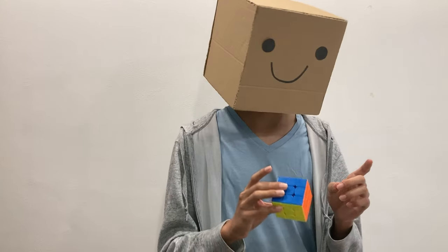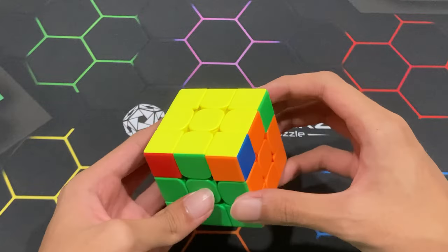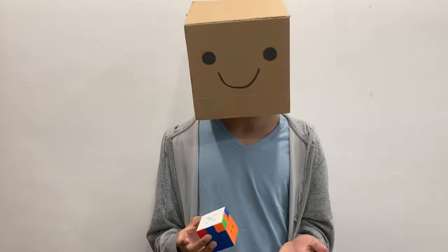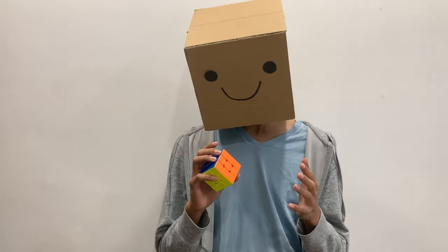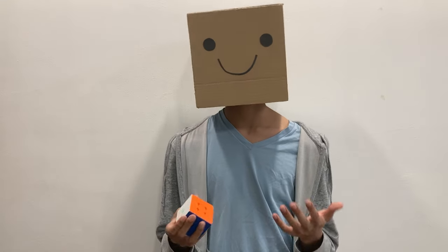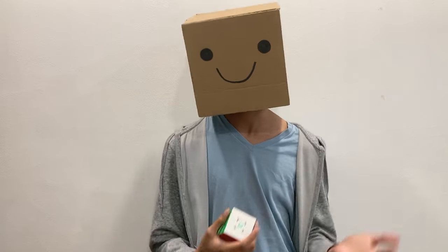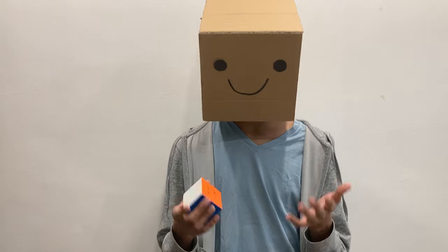But here's where the headache starts. A lot of commutators can actually be found inside well-known algorithms, like the E-perm, which is just two corner commutators lumped together. But because of this, by our definition, an E-perm isn't an algorithm. Which brings us to our last definition: an algorithm is just a series of pre-memorized moves that bring the cube closer to a solved state. And while this definition might still have some holes in it, it removes a lot of the gray area found in the other definitions. But if you think you have a better definition, please comment it below.